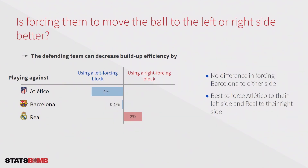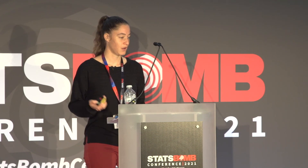Going further, we look at what happens if we actively force the ball to a certain side rather than just letting them start somewhere. Here we see results for the top three teams in the Spanish La Liga — Atlético, Barcelona and Real — under left and right forcing blocks. For Barcelona there's no real difference in forcing them to either side. For Real, forcing them to their right side is again a good idea. For Atlético, we do see a difference: forcing them to their left side is actually the better approach.